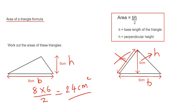So to work out the area, we do 9 times 4 divided by 2. So 9 times 4 is 36, and then half of that is 18 centimeters squared.